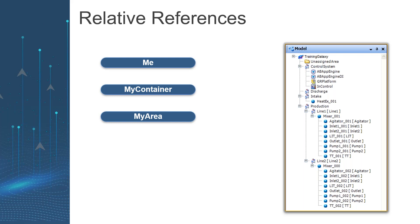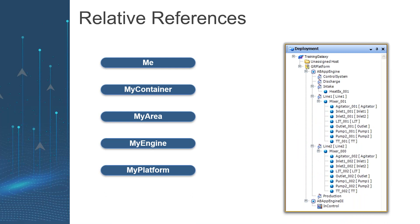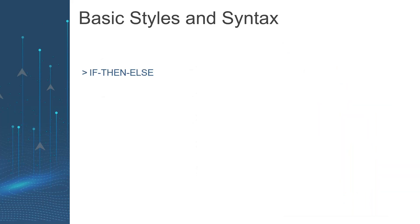Regarding 'MyContainer': from any object I can reach its container. For example, if I'm scripting inside Agitator and I want to read something from Mixer or from any object within that containment relationship, I can write 'MyContainer' which resolves to Mixer, then reference something like PumpOne.AValue. Similarly I can reach 'MyArea', 'MyEngine' — for example to read the historian name — or 'MyPlatform' to get the computer name. Relative reference is a very powerful tool in System Platform.